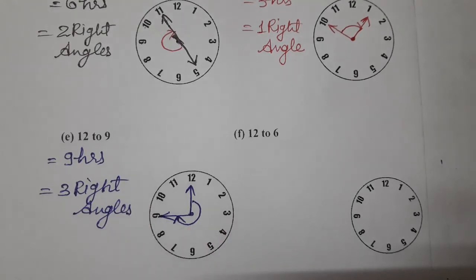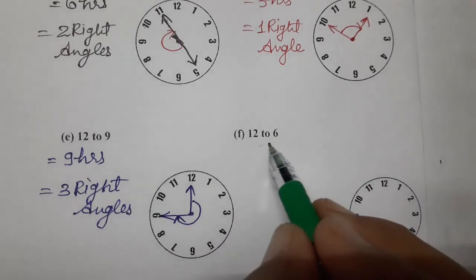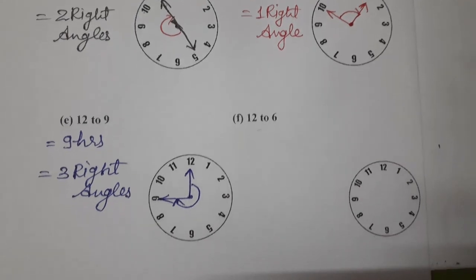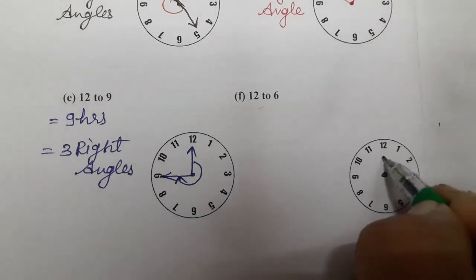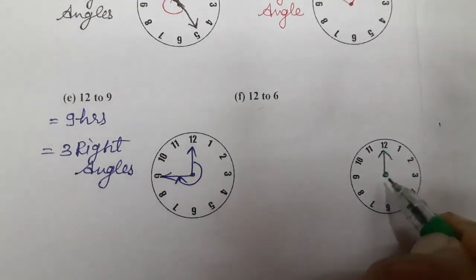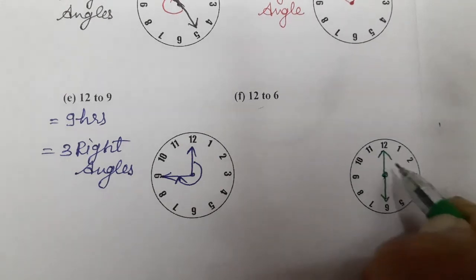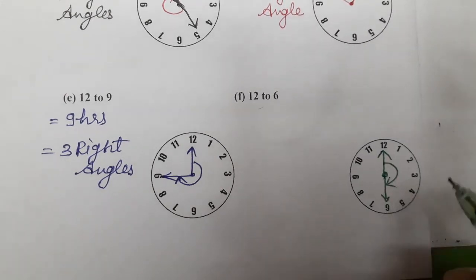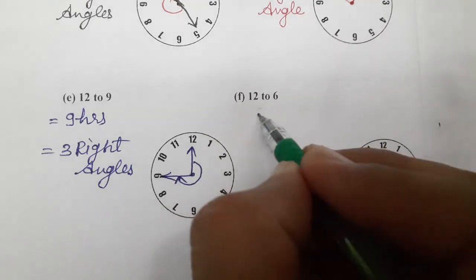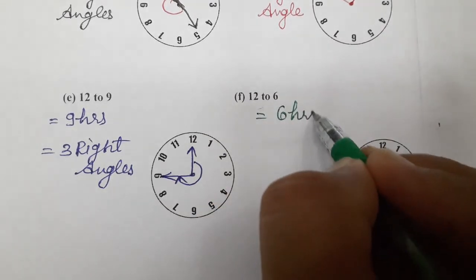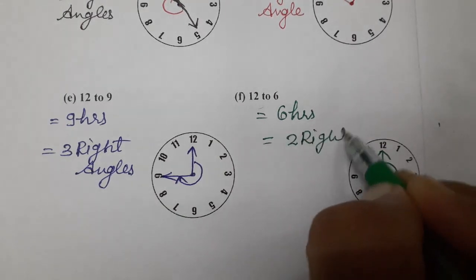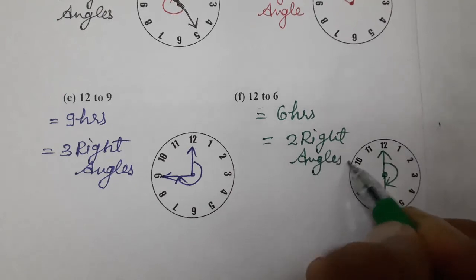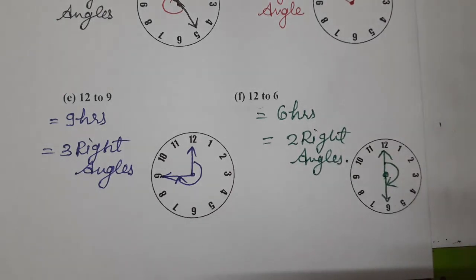And the last one, (f) 12 to 6. Where is 12? Here. And 6 is here. Clockwise: 1, 2, 3, 4, 5, 6 — 6 R's, and 6 R's means 2 right angles. So this completes our question number 5. Thank you so much for watching the video.